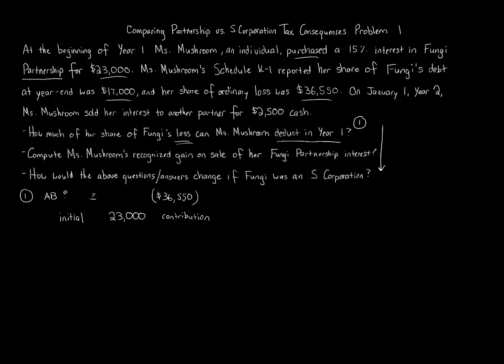We're told that per the K-1, Ms. Mushroom's share of the liabilities, $17,000. Plus the liability portion, that's $17,000. If we add those two numbers together, $23,000 plus $17,000, we get $40,000 adjusted basis before considering the loss.